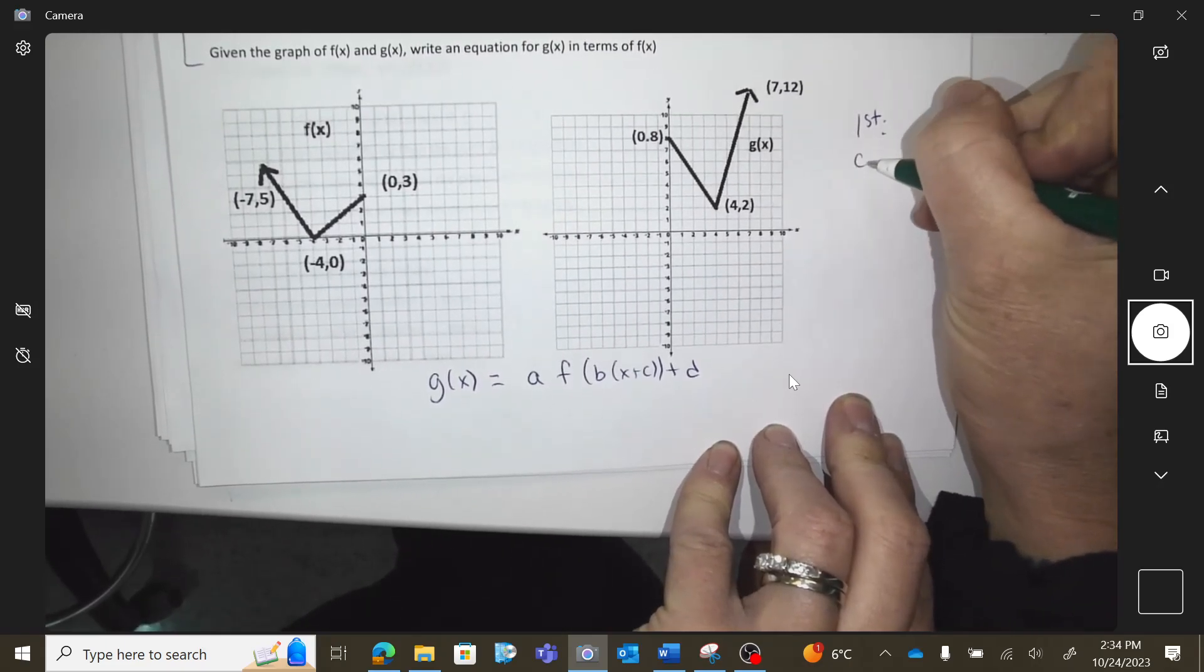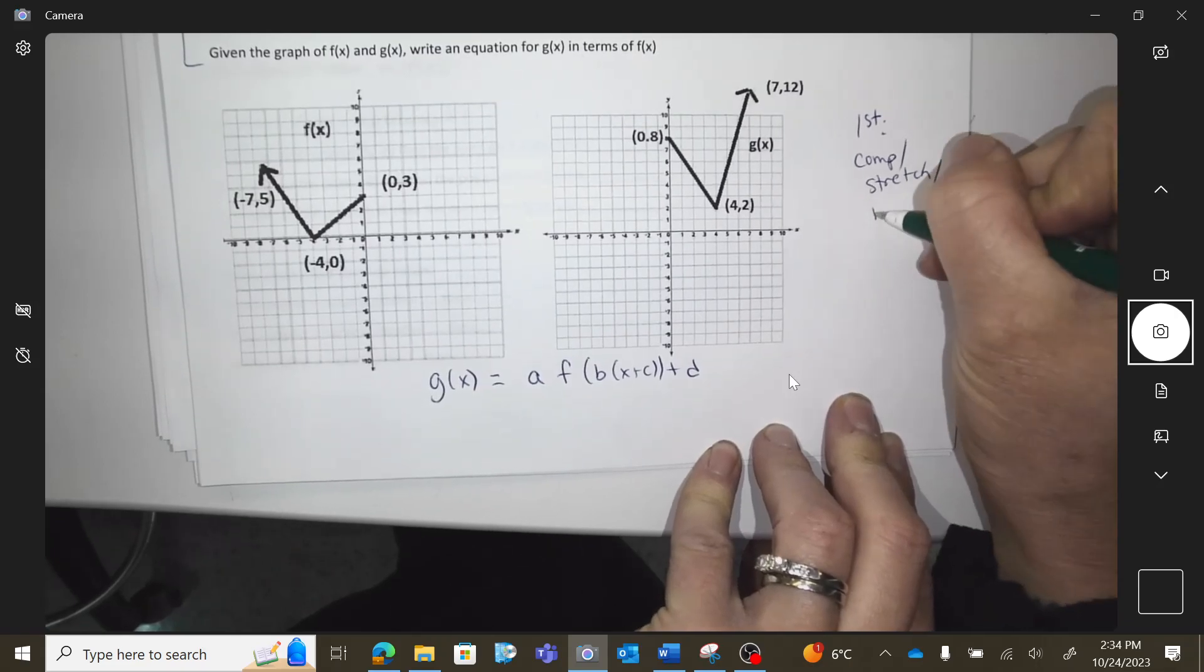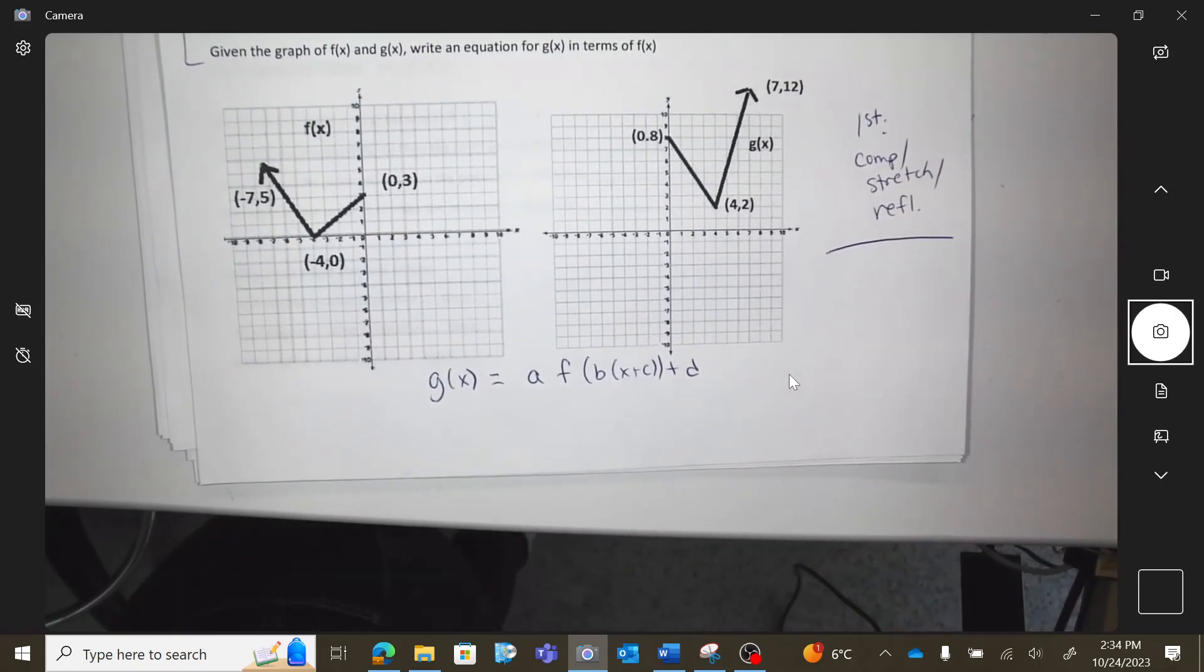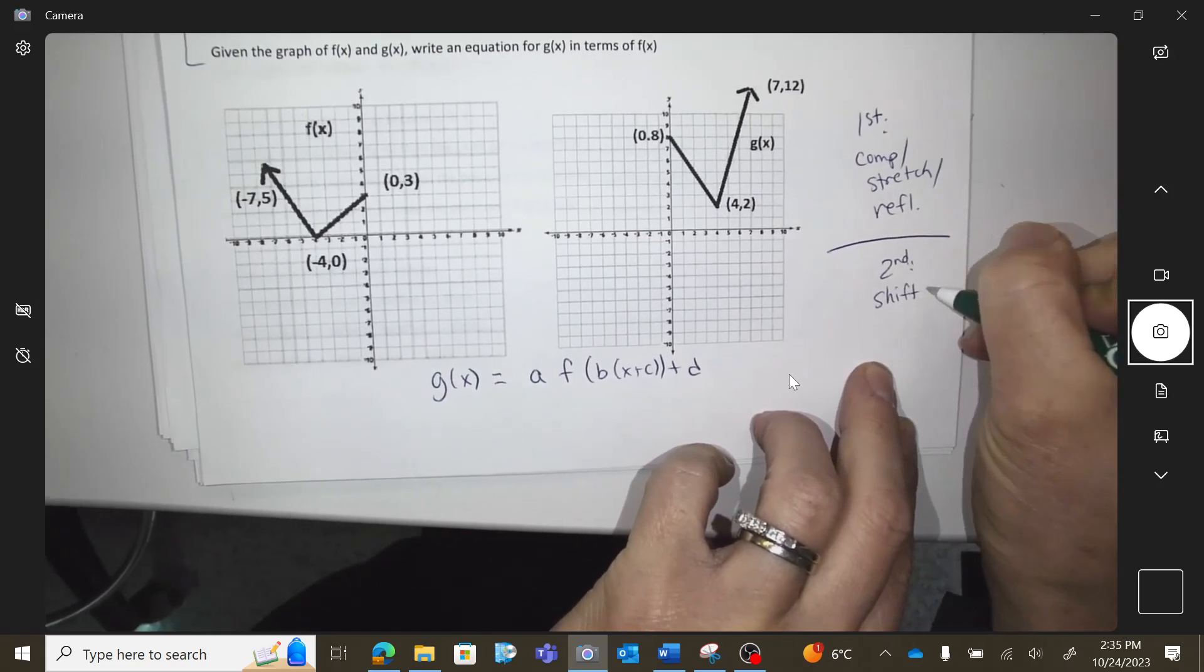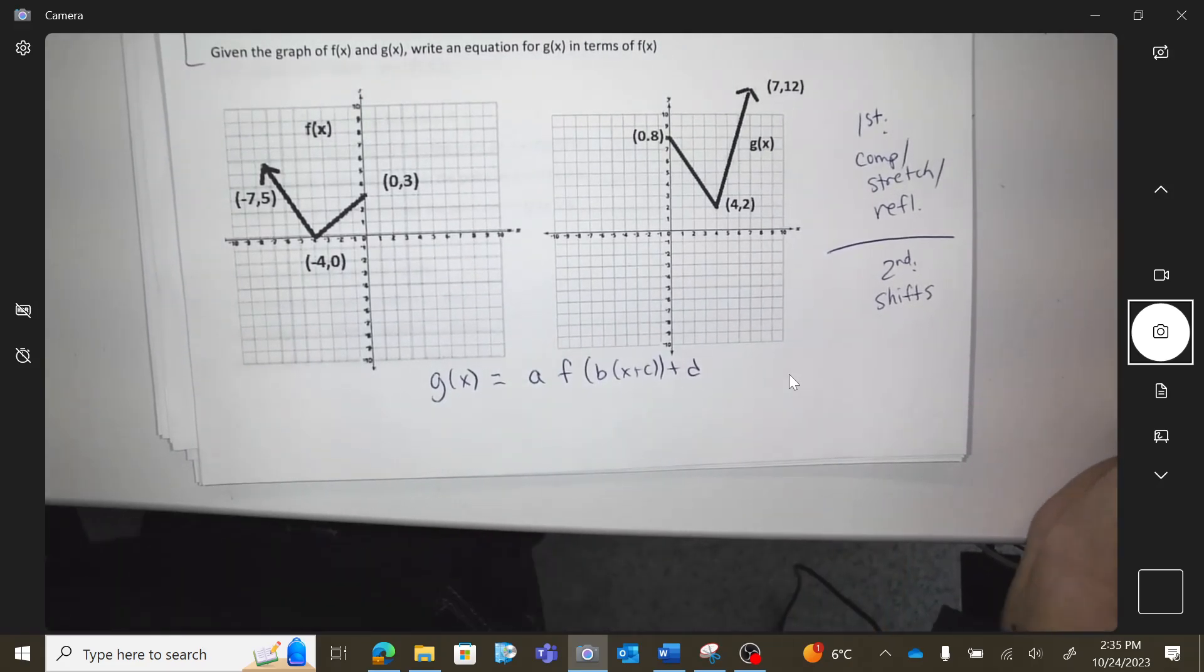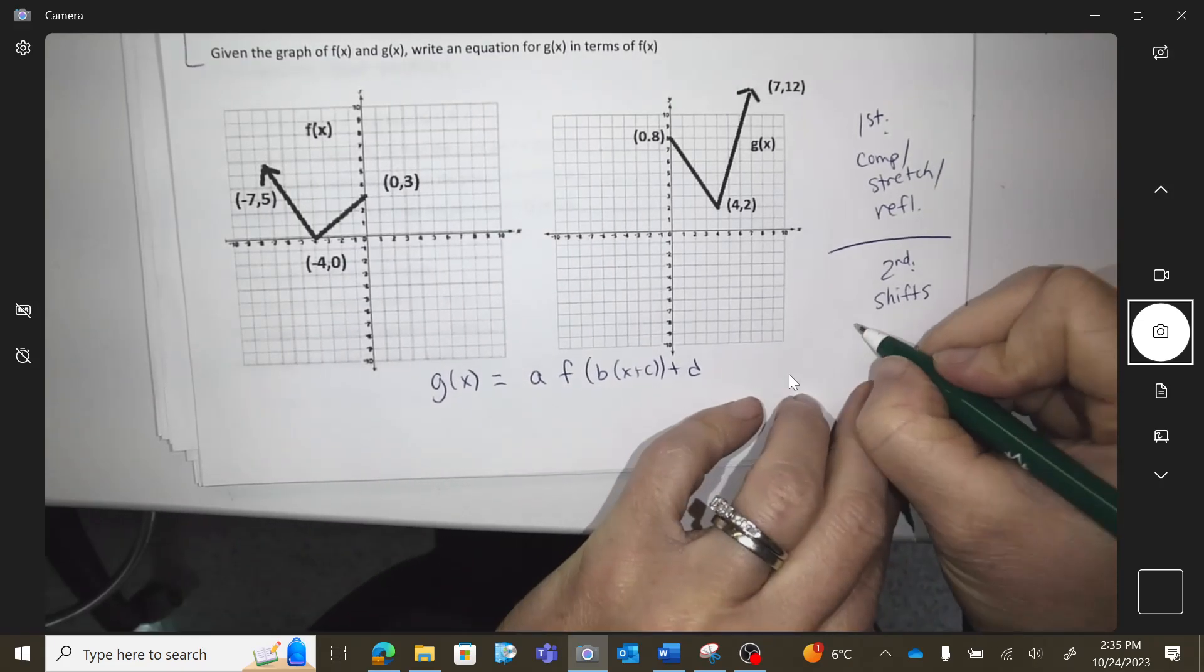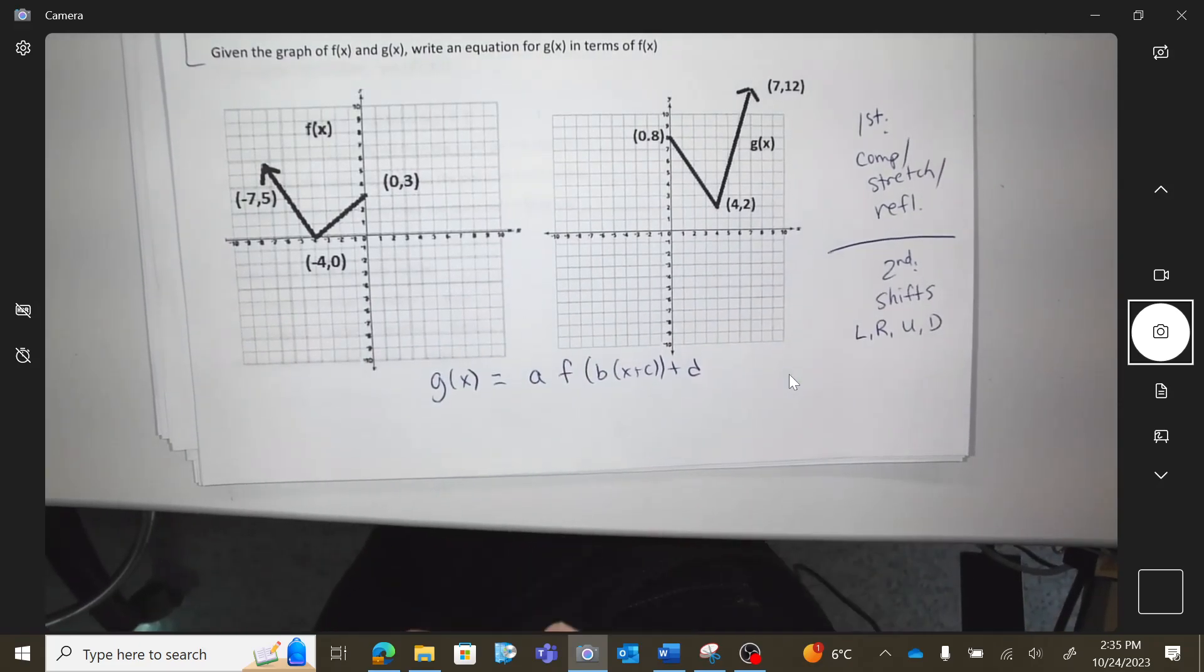So first thing we're going to look for is any compressions, any stretches, any reflections, because those are all multiplying and dividing things. Then we're going to look for shifts. Shifts could move left, right, up, or down.